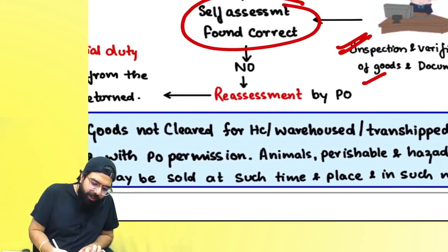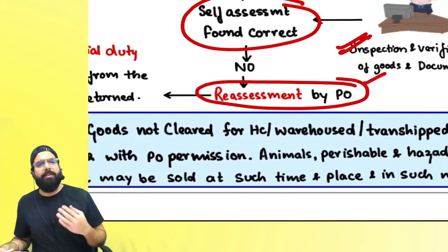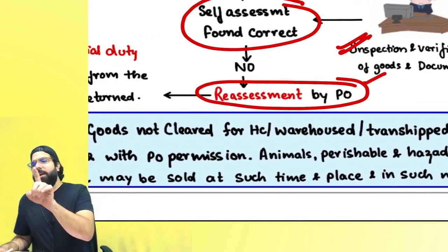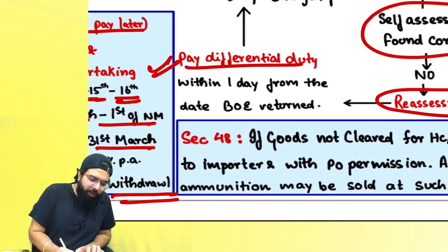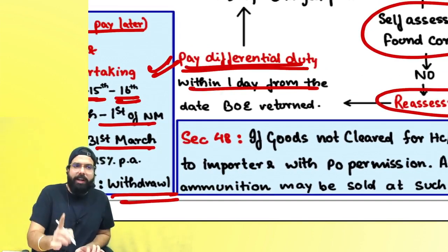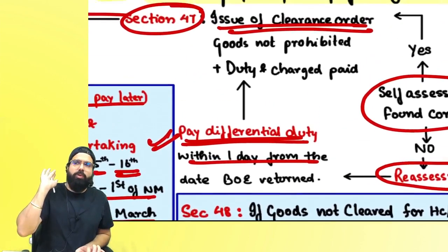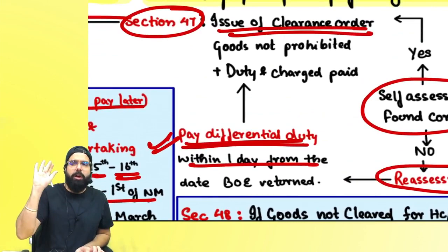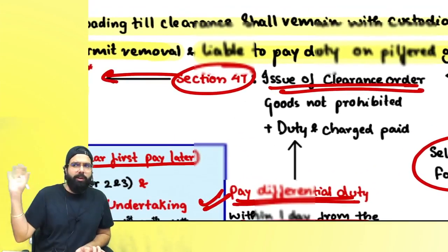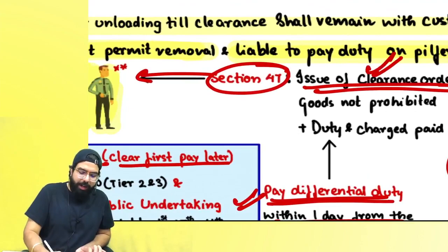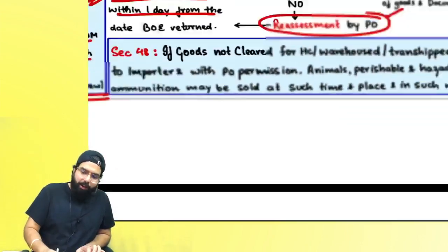If the officer finds some mistake during checking, he will do a reassessment and tell you to pay the differential duty within one day from the day he returns the bill of entry. Once you make the payment, he will verify goods are not prohibited and all duties are cleared, then issue a clearance order — go to the custodian, take your goods, and go home.